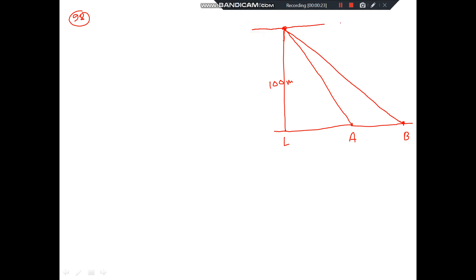In the angle of depression, this is one angle and this is another angle. One is 30 and another angle is 45, so the bigger one is 45. So if you write alternate angle, this will be 45 degree and this is 30 degree.